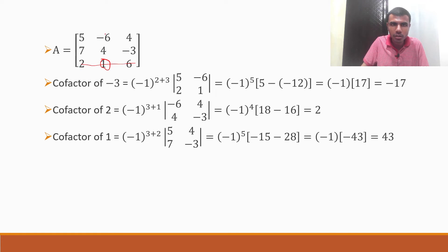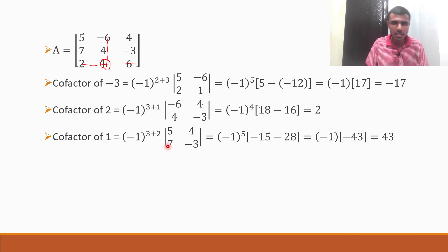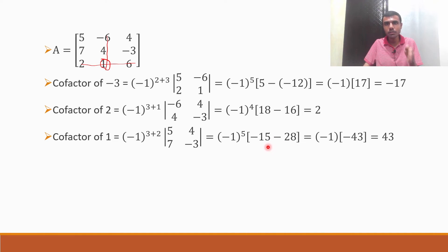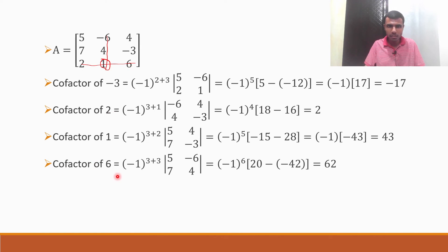Cofactor of 1 at position (3,2): (-1)^(3+2) × det[5, 4; 7, -3] = (-1)(5×(-3) - 7×4) = (-1)(-15 - 28) = (-1)(-43) = -43. Note: when subtracting two negatives, add the magnitudes and keep the negative sign.